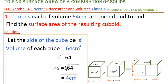To find the measurements of the cuboid, we know that the volume of each cube is 64 centimeter cube. By using this we can find the measurements of the cuboid.